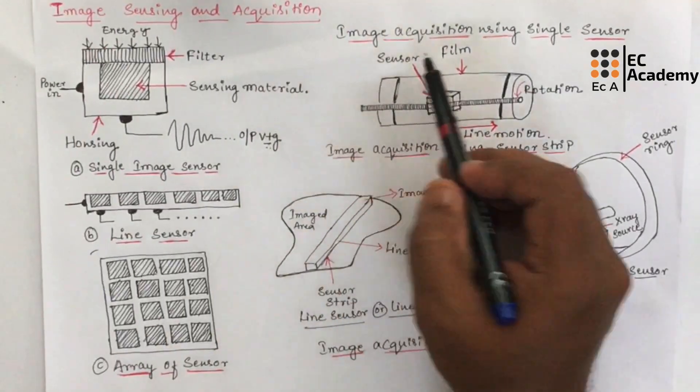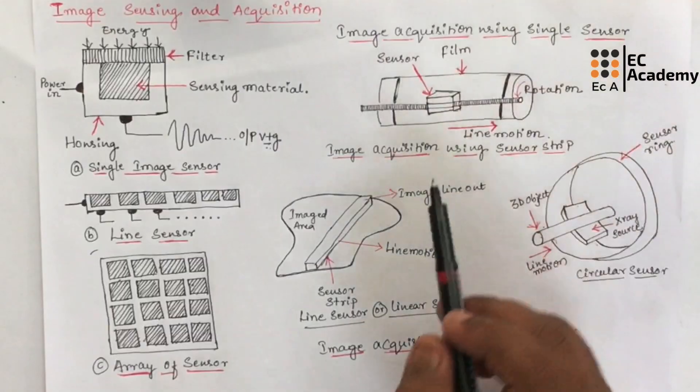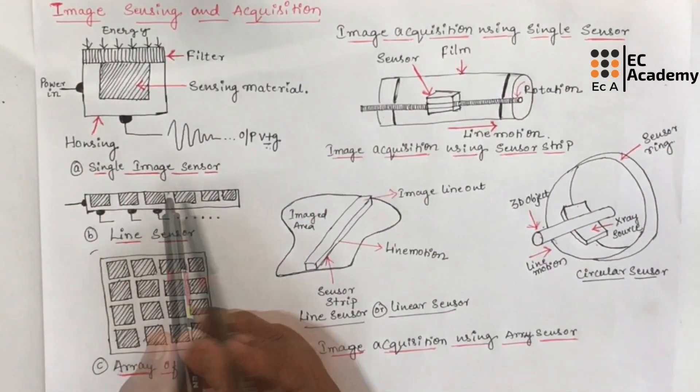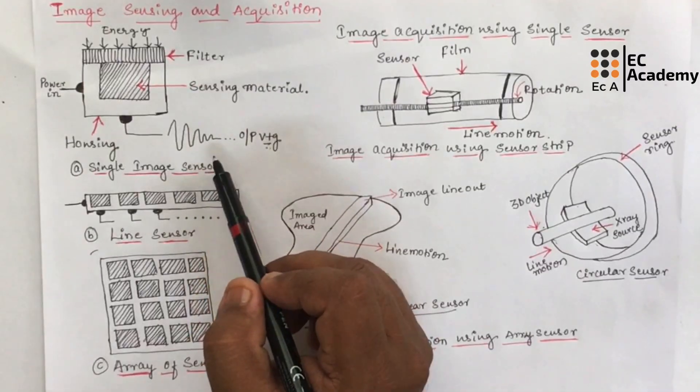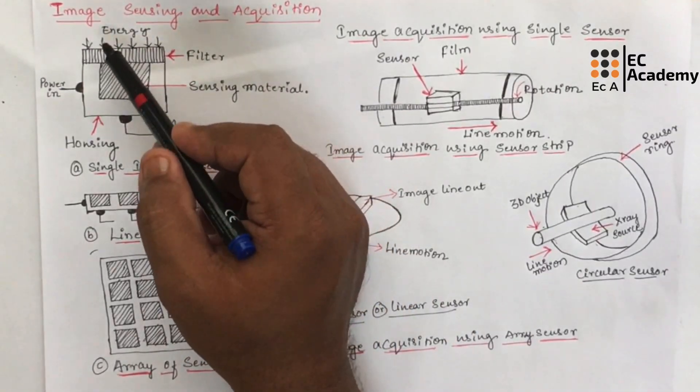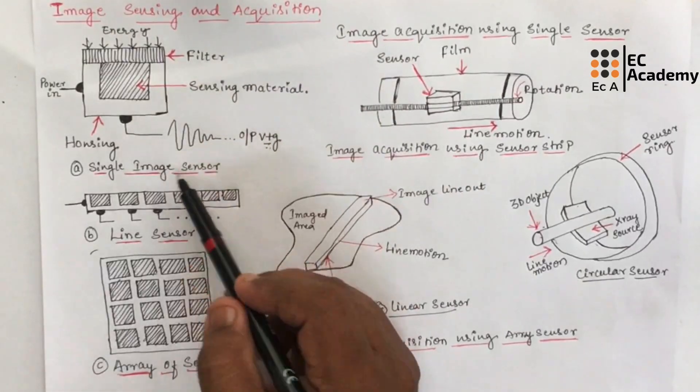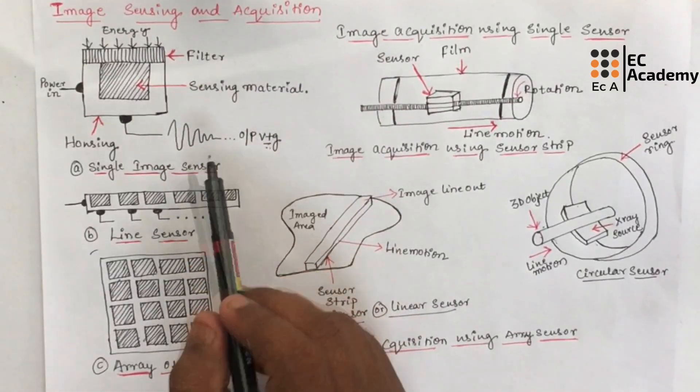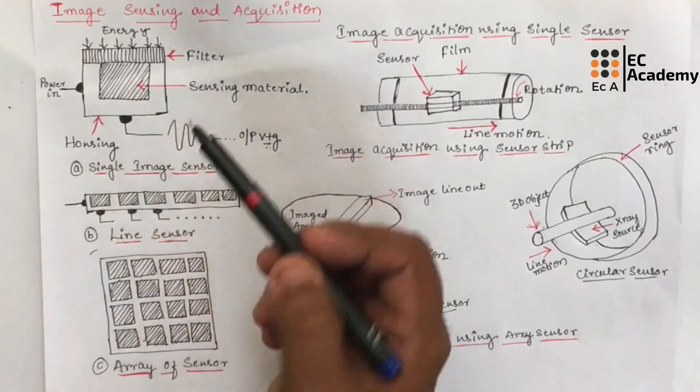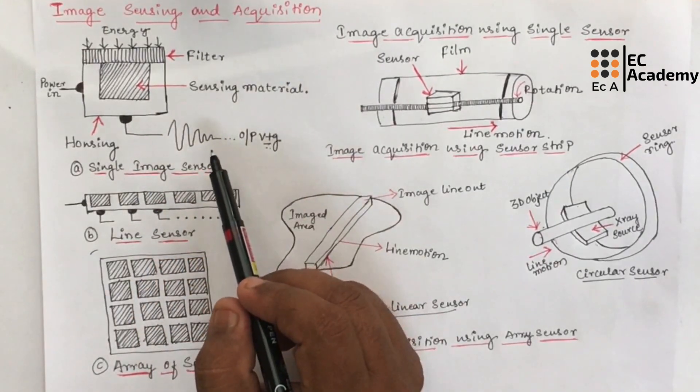Now let us understand image acquisition using single sensor. Figure A shows a component of a single sensor, where the output of this sensor will be proportional to the light. As the light energy varies, the output voltage will also vary. Example for this type of sensor is photo diode, whose output is also proportional to the input light.